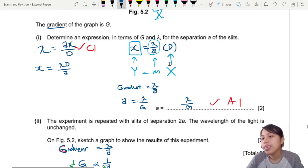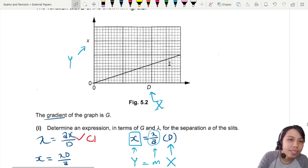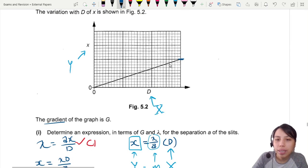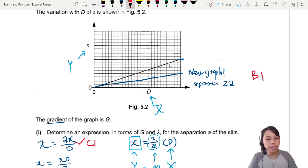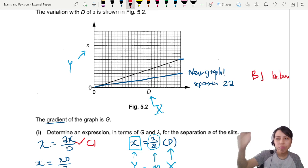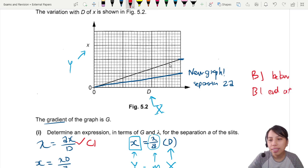How to draw half the gradient? Luckily there's no intercept. We can just say, this is the highest point, we half that and draw a line. So this will be the new graph for when your separation is 2a. If you draw something below the original line, that's okay, you already get a mark.